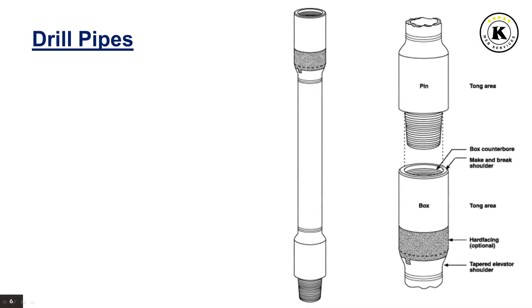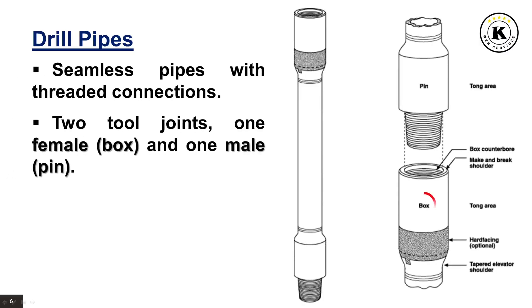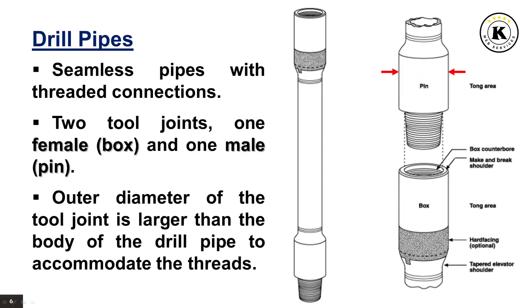The drill pipe constitutes the majority of the drill string length. It is seamless with threaded connections. The drill pipe has two tool joints: one female, called a box, and the other male, called a pin. The outer diameter of the tool joint is larger than the body of the drill pipe to accommodate the threads.